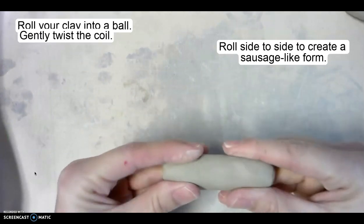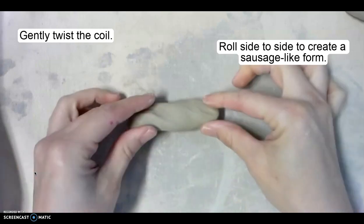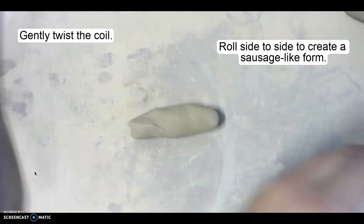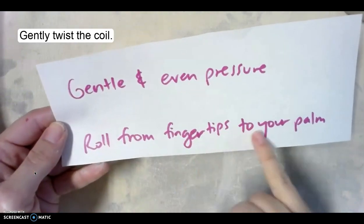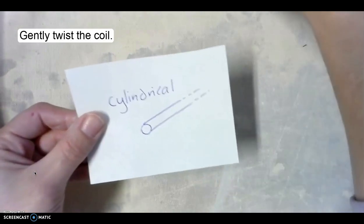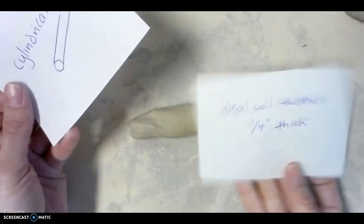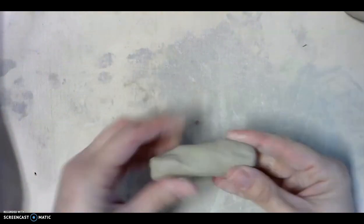Then you can actually twist it a little bit just to get it started, and then when we're rolling our coil, we want to use gentle and even pressure, and we're rolling from our fingertips to your palm, and it just takes practice. Coils should be cylindrical, so more like a tube, and for what we're doing, we're looking for an ideal coil thickness of about one-fourth inch thick, though of course we're just practicing.